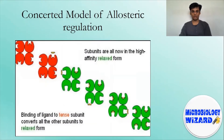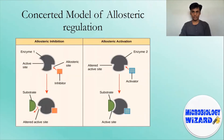The concerted model of allostery, also referred to as the symmetry model or MWC model, postulates that enzyme subunits are connected in such a way that a conformational change in one subunit is necessarily conferred to all other subunits. Thus, all subunits must exist in the same conformation. The model further holds that in the absence of any ligand — substrate or otherwise — equilibrium favors one of the conformational states, tensed or relaxed. The equilibrium can be shifted to the R or T state through the binding of one ligand to a site different from the active site, i.e., the allosteric site.